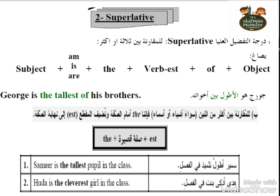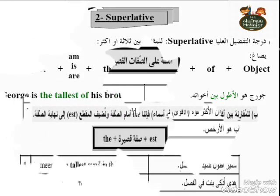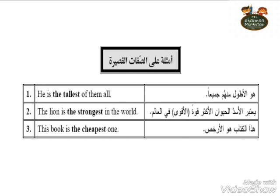George is the tallest of his brothers — meaning he is the tallest among his siblings. The adjective takes 'est.' We have examples: he is the tallest of them all. The subject, then verb to be — am, is, or are — then the adjective with 'est,' then the object.